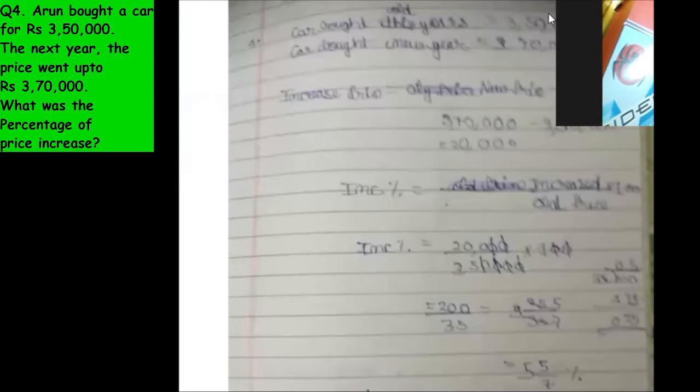Okay, read question number four. Aran bought a car for rupees 3,50,000. The next year the price went up to rupees 3,70,000. What was the percentage of price increase?